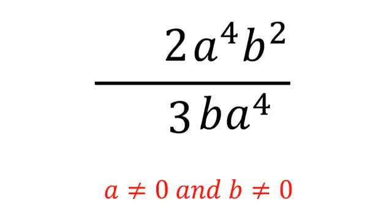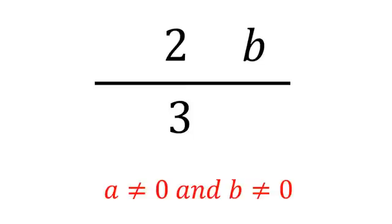A to the exponent 4 and a to the exponent 4 will cancel each other. And finally, b squared and b - the b in the denominator will be removed and we have only b above, so it is 2b/3. That's all and bye bye.